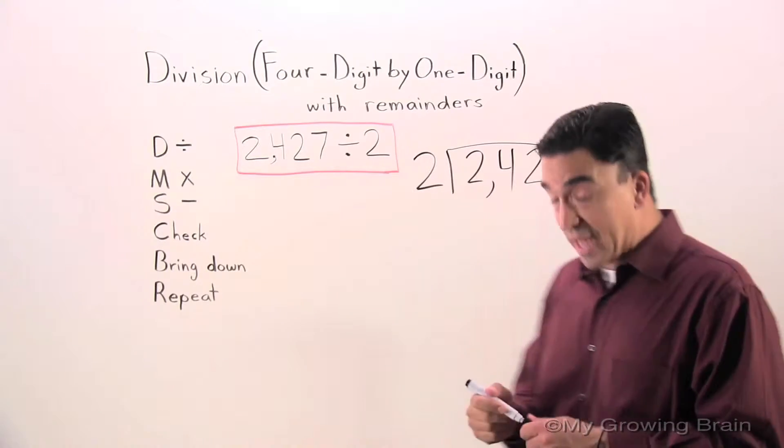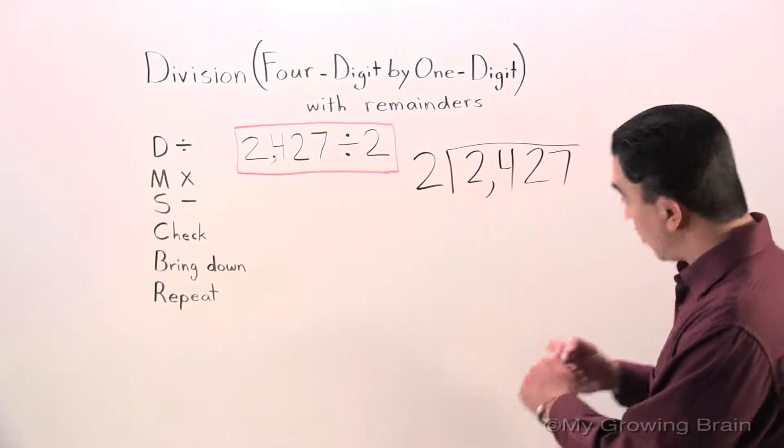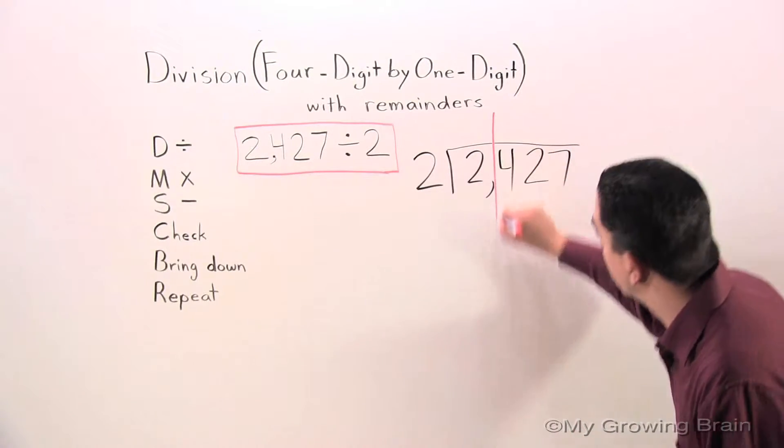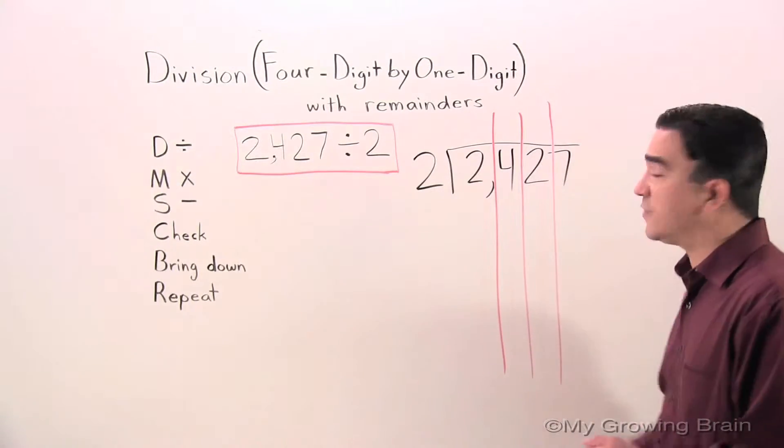Now a step that Coach Mike always does to make sure I get my problem right is to organize it. And how I'm going to organize it, I'm going to place columns between the digits and the dividend.